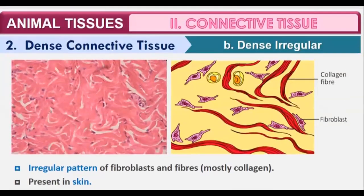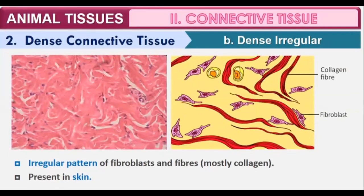The next type is dense irregular connective tissue. In dense regular connective tissue, collagen fibers were present between parallel rows of fibers, making the tissue regularly dense all along its body. But in dense irregular connective tissue, an irregular pattern is seen instead — in the diagram we can see there were parallel rows of fibers in the regular type.